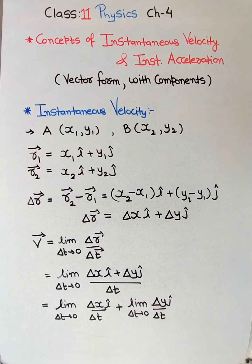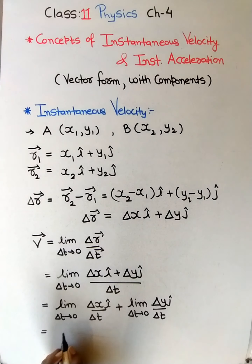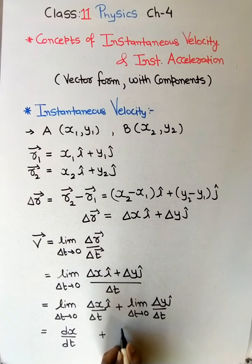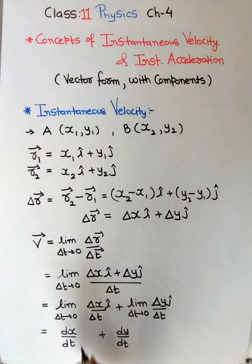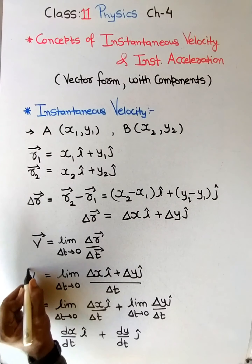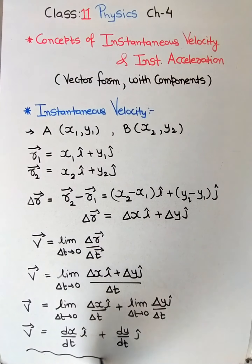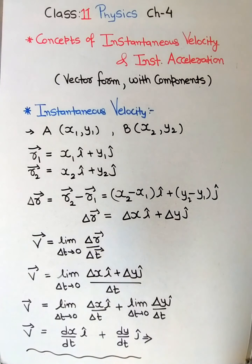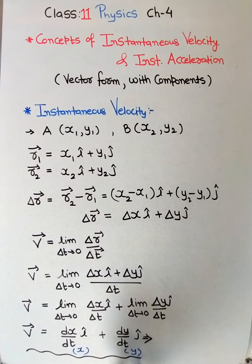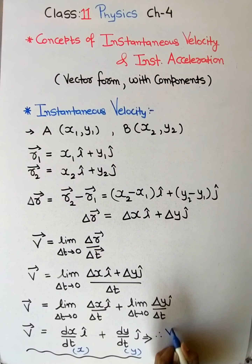We split up the x and y terms. We know that when we apply the limit delta t tends to 0, the delta converts into d, so delta x / delta t becomes dx/dt and delta y / delta t becomes dy/dt. Don't forget to put the i and j components. This gives us the instantaneous velocity in vector form. We can split this into the x component and y component of velocity.